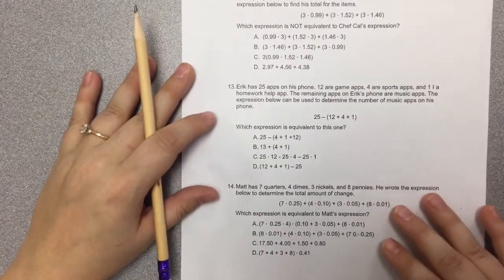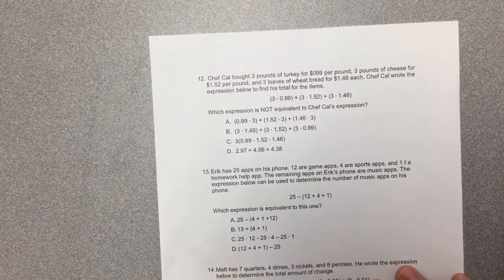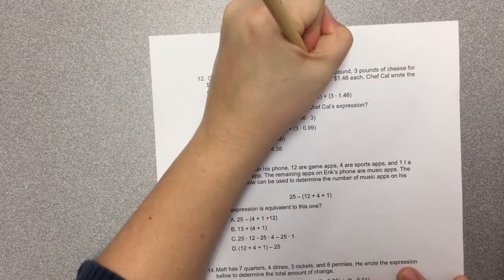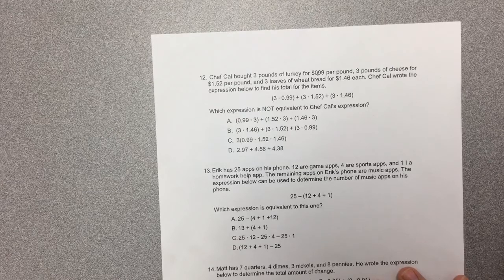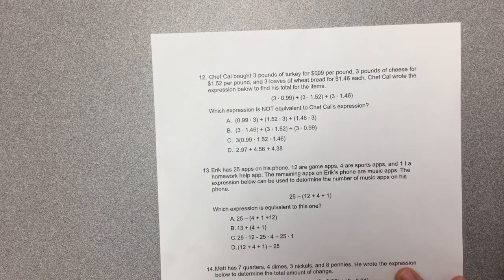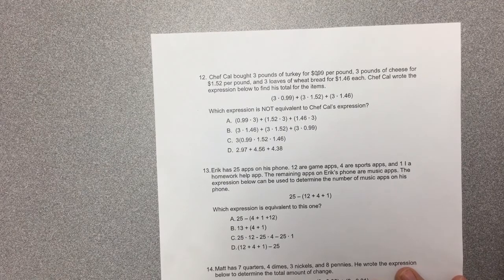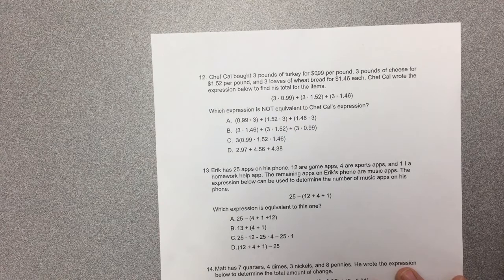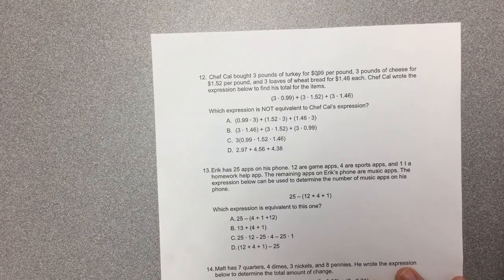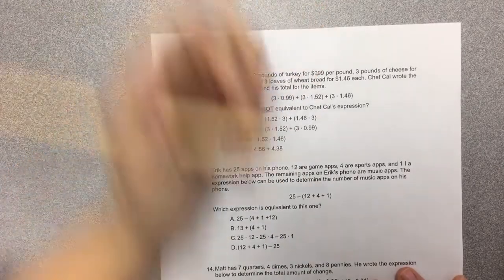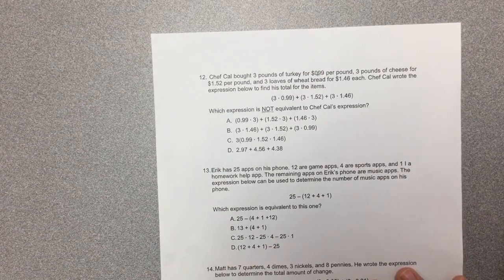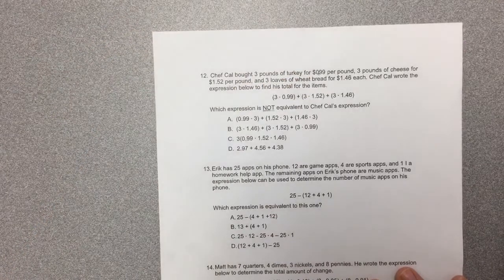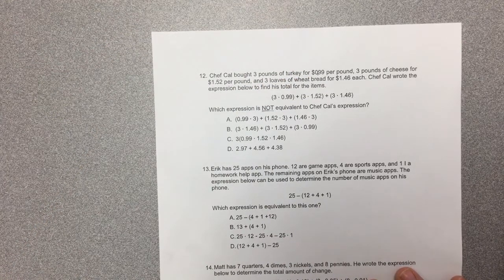Okay, Chef Cal bought three pounds of turkey for 99 cents per pound, three pounds of cheese for $1.52 per pound, and three loaves of wheat bread for $1.46 each. Chef Cal wrote the expression below to find his total for the items: 3 multiplied by 99 cents plus 3 multiplied by $1.52 plus 3 times $1.46. We're trying to find which expression is not equivalent. Again, you could solve all the way out, or you could look for the different pieces just moved around in the expression, as long as we're not going to end up with different groupings, because remember your order of operations might change if you group differently.